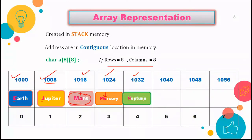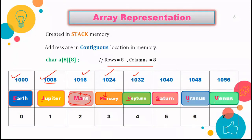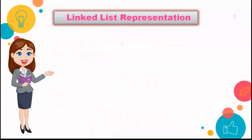In this way we store all the planets: M, then N, then S, then U, then Venus. All planets are arranged in alphabetical order from A to Z, and the addresses are in contiguous memory locations. This is the specialty of the array, and your array is created in stack memory.